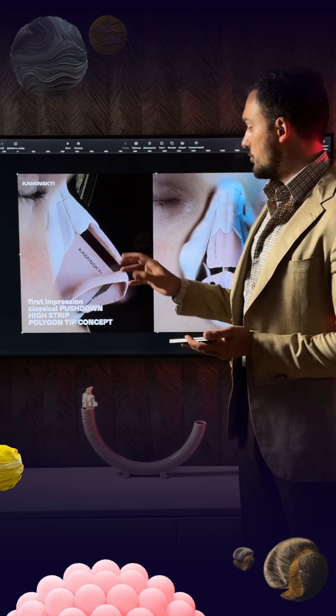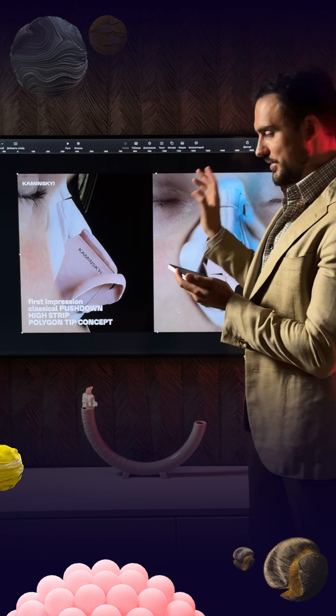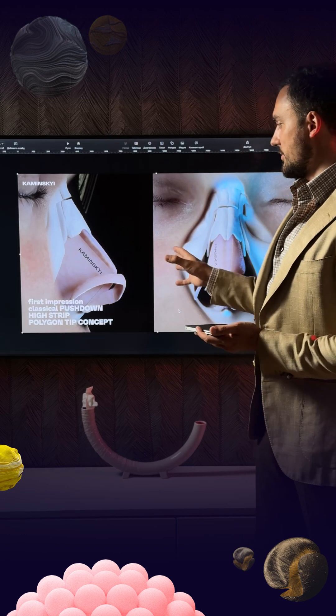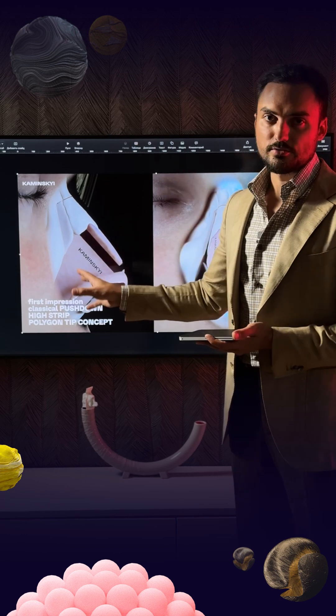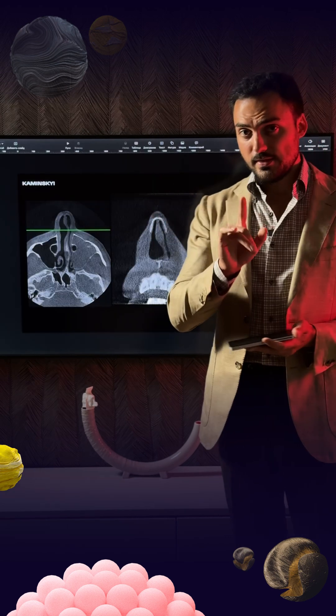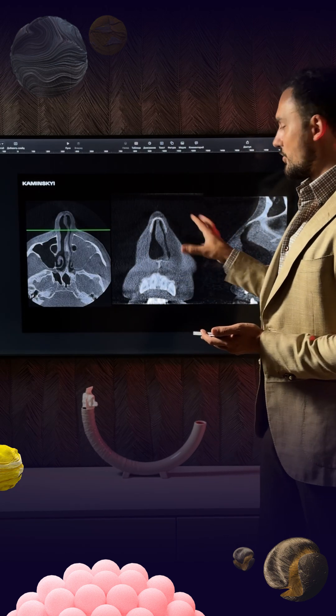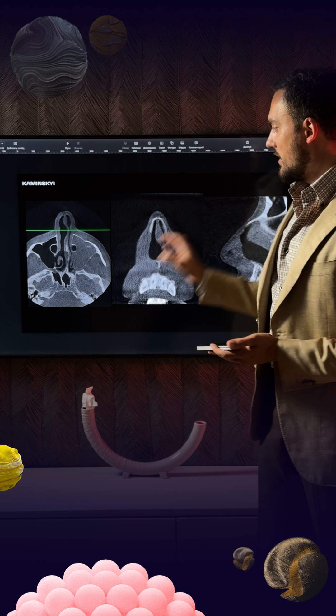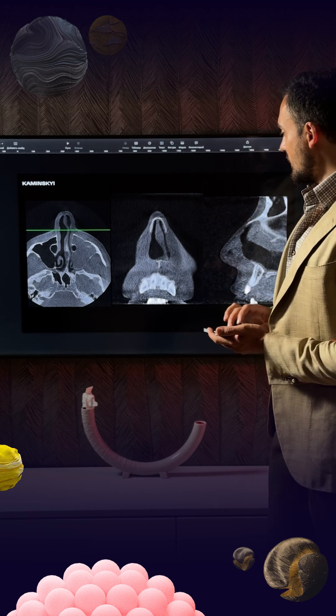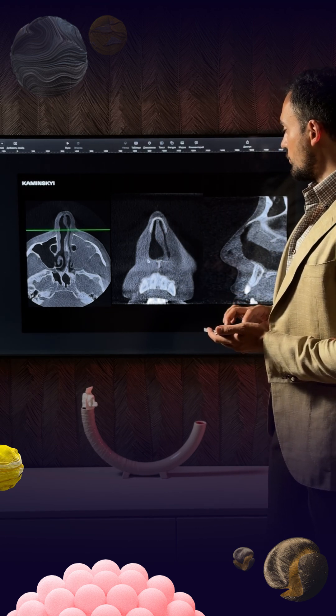So my idea was to use classical preservation rhinoplasty. For example here push down rhinoplasty with the high strip. But then I saw the CT scan of the patient and on the CT scan of this patient, what we can see?